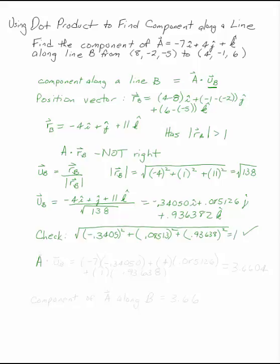Now we can take the dot product of A and UB, and we will not have increased the magnitude. To take a dot product, you multiply the i components,